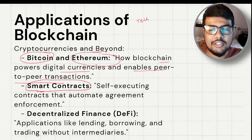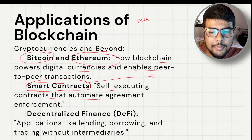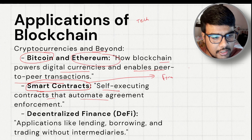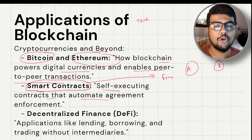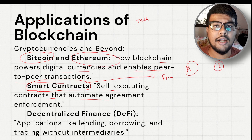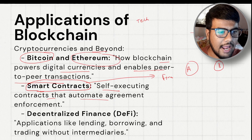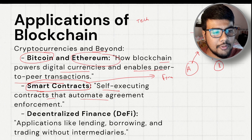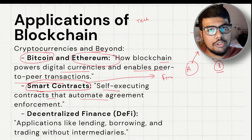Smart contracts are another major application. These are self-executing contracts that automate agreement enforcement. For example, in a financial company with two parties A and B who have an agreed service and payment, you can create a smart contract: if the agreed service is provided, the payment is automatically credited. The smart contract acts as a mediator — party A provides the service, updates the contract, and party B's payment is released automatically once service is confirmed.